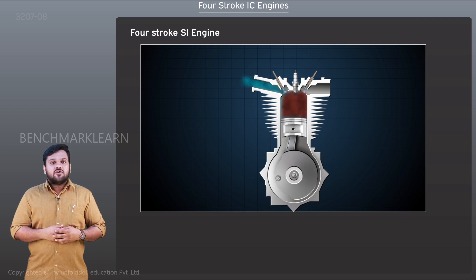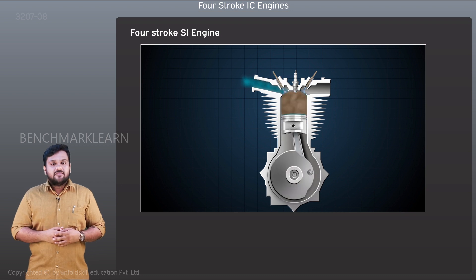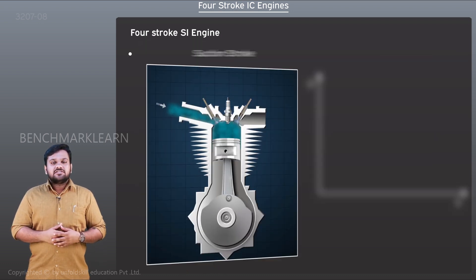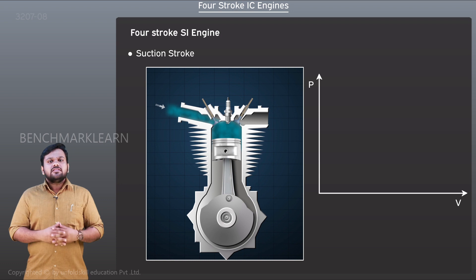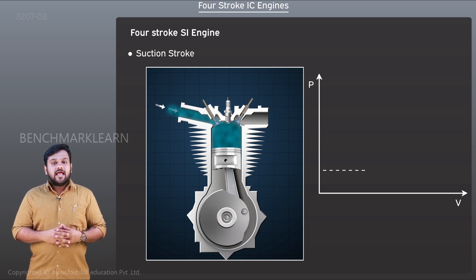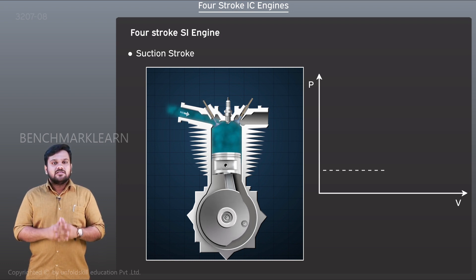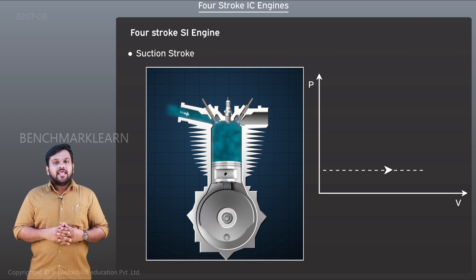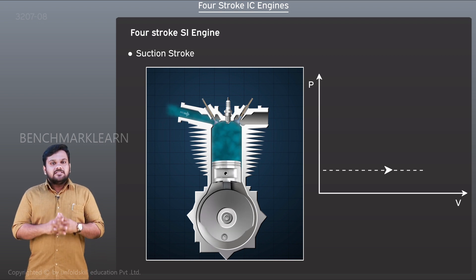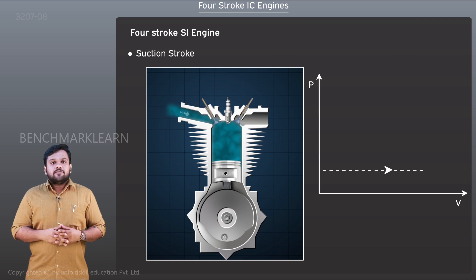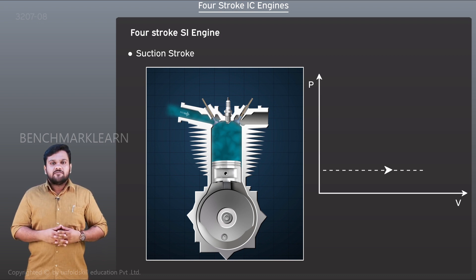During the suction stroke, the inlet valve opens and an air-fuel mixture is sucked into the engine cylinder. This is identified by the process represented by the dotted lines in the PV diagram. The piston moves from the top dead center to the bottom dead center, and the volume increases.